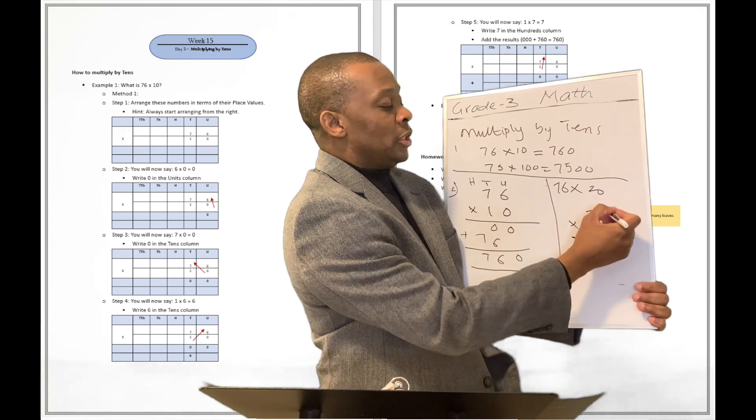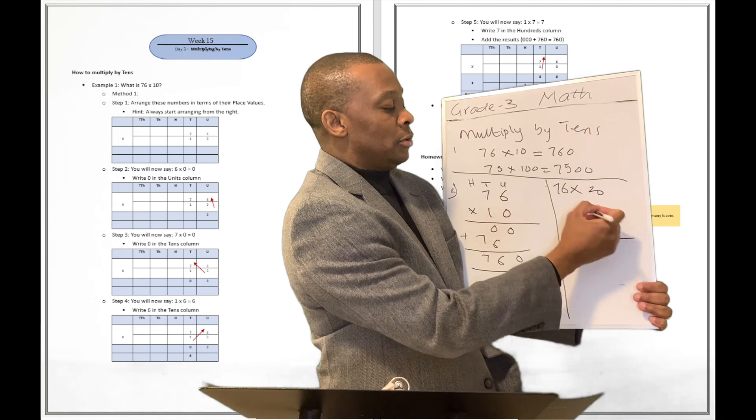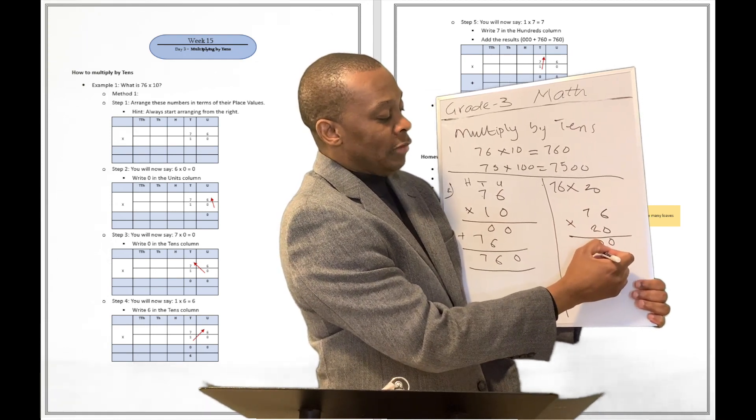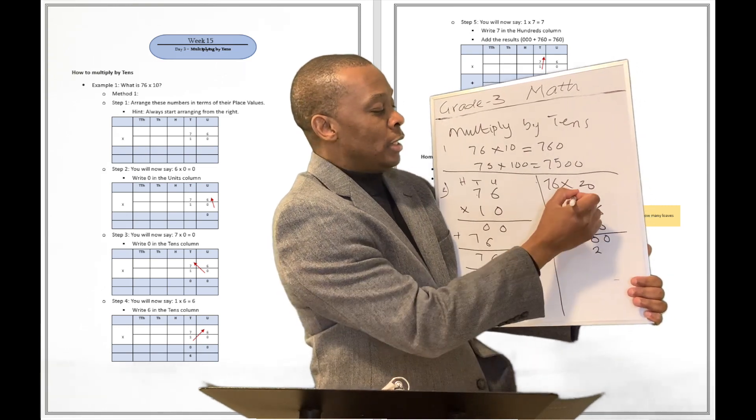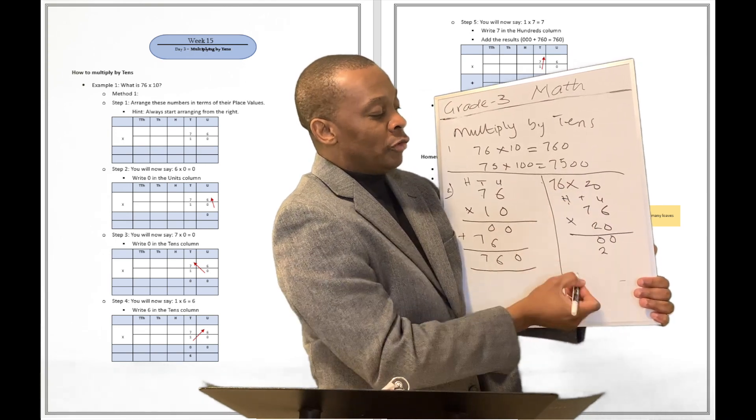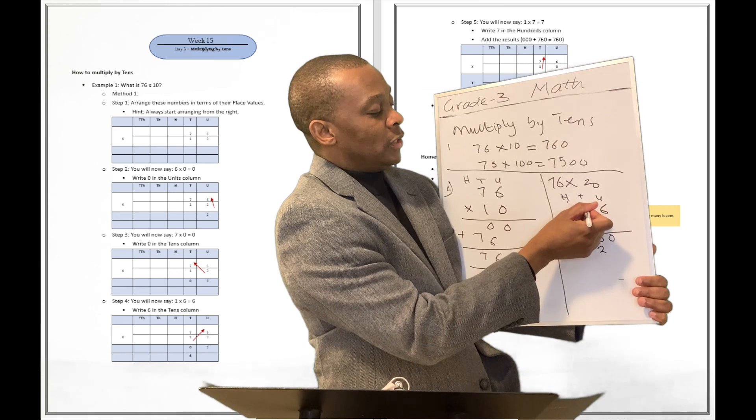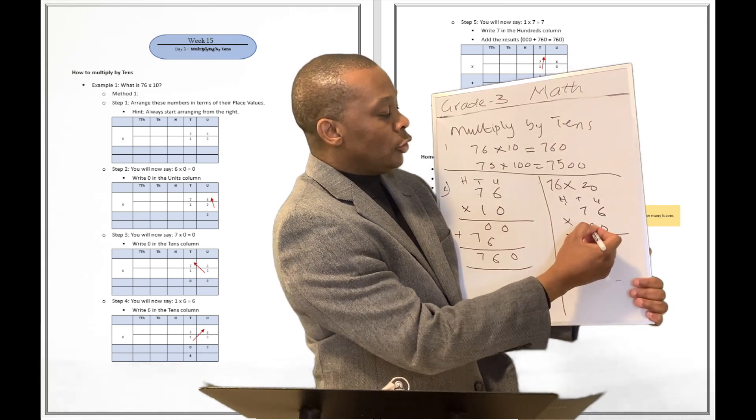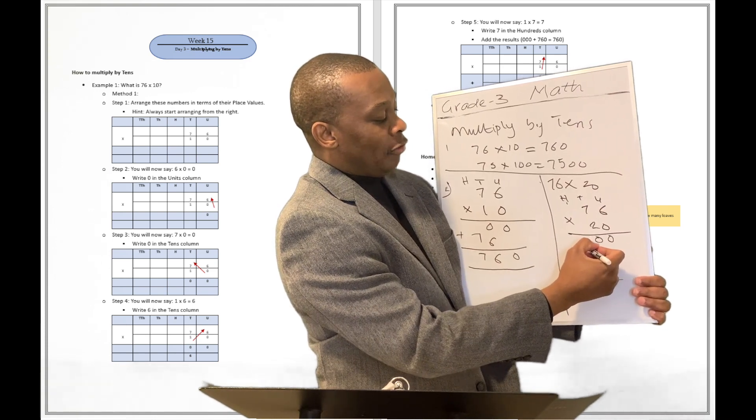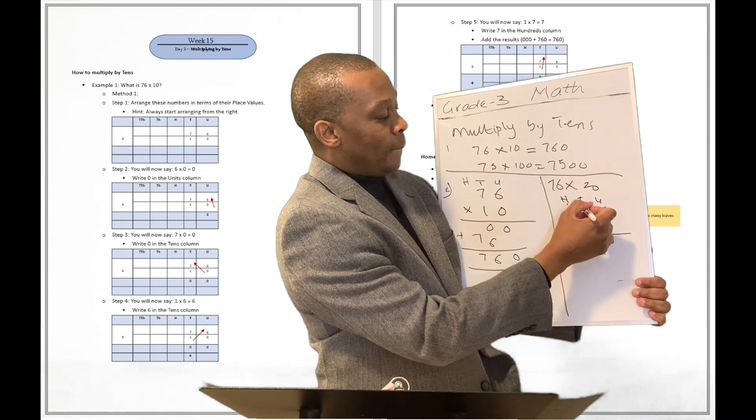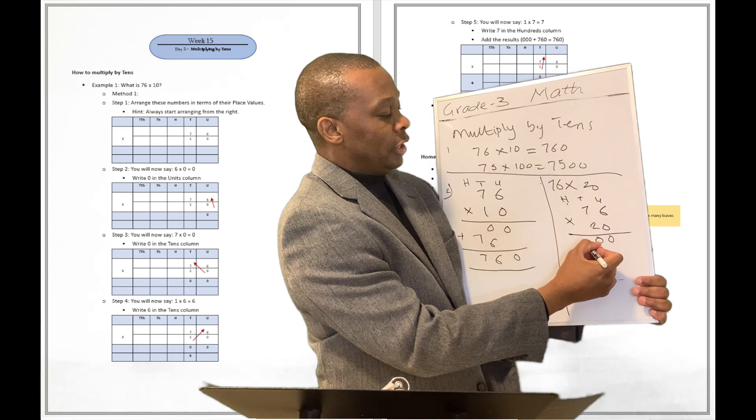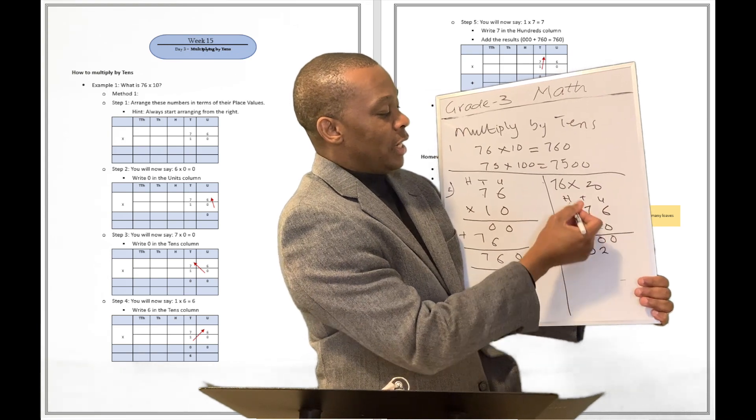So, you're going to go like this. That's 0 times 6. That's a 0. 0 times 7. That's a 0. 2 times 6. What's that? That's 12. But you write down 2 and carry your 1 over here. 2 times 7, right? Well, that's going to be 14. But then 14 plus 1. That's going to be 15. So, you write your 15 over here.